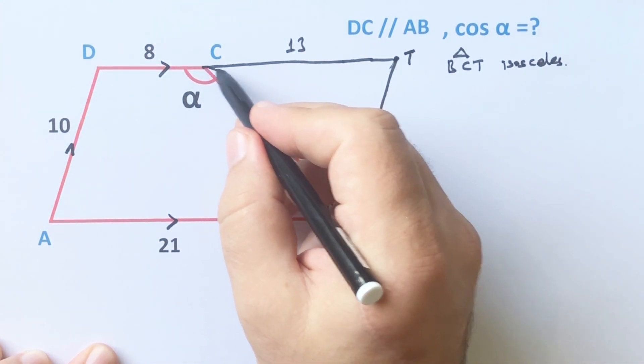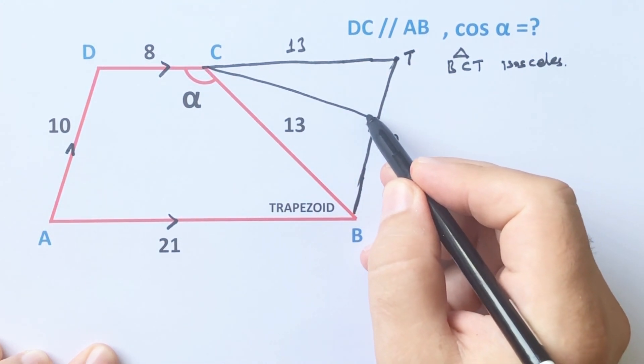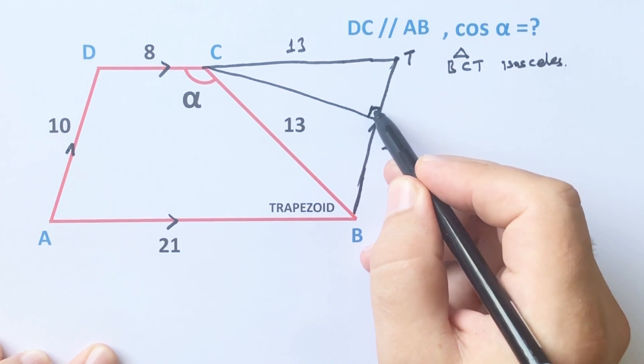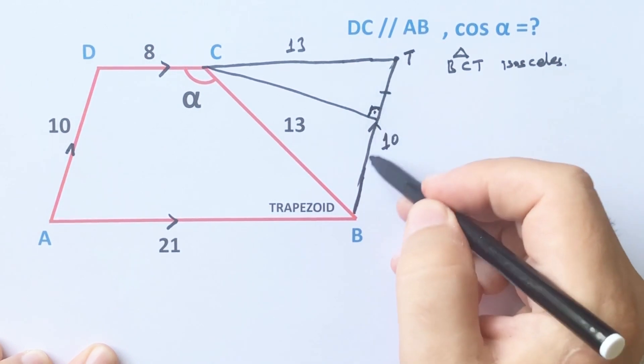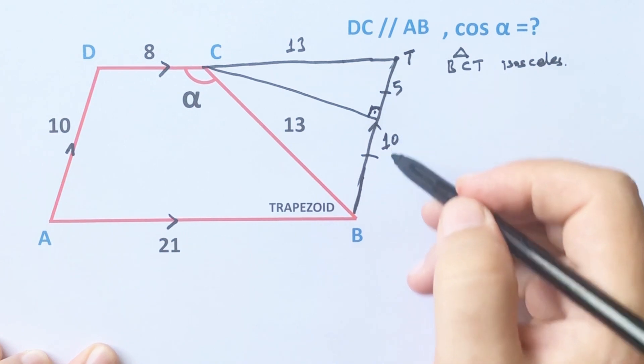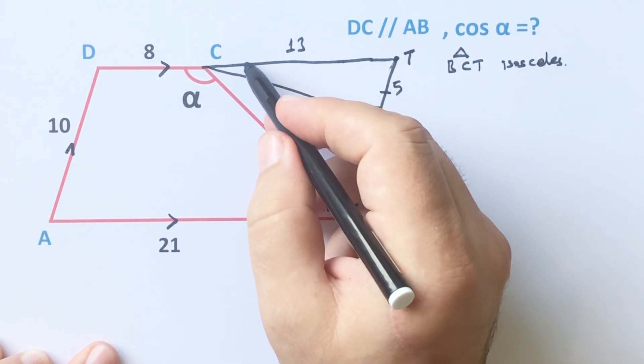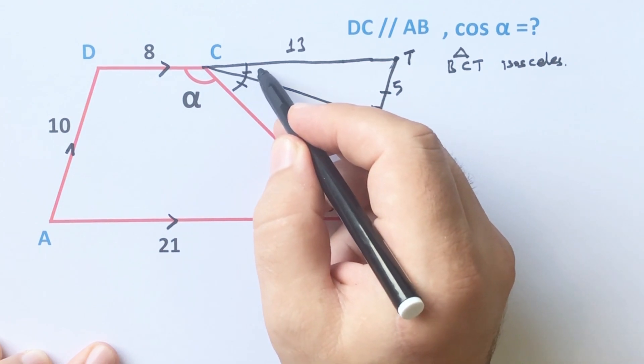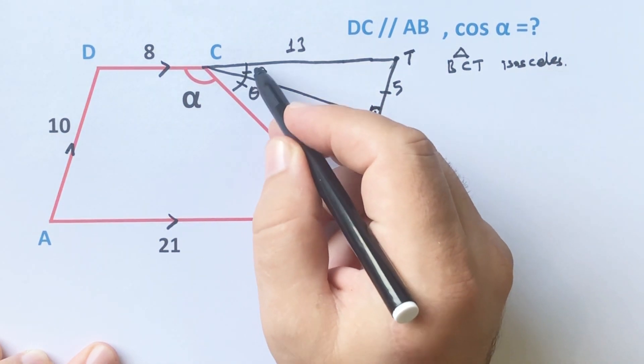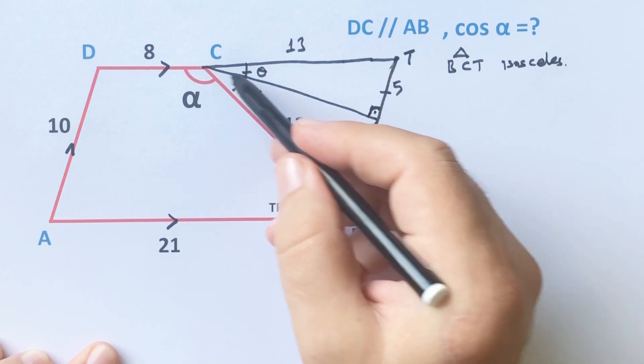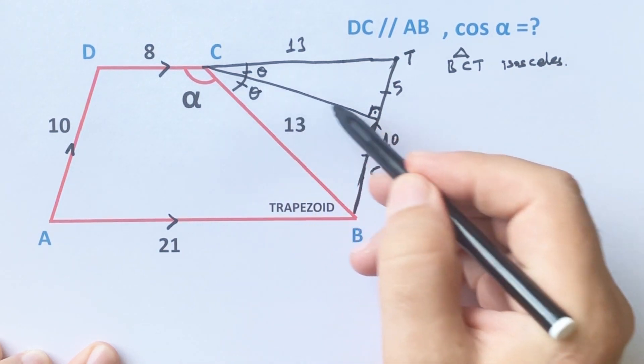Okay, so if we draw a perpendicular line, you know that the base will be divided into two equal parts. And these two angles must be equal, right, because this line is a bisector line.